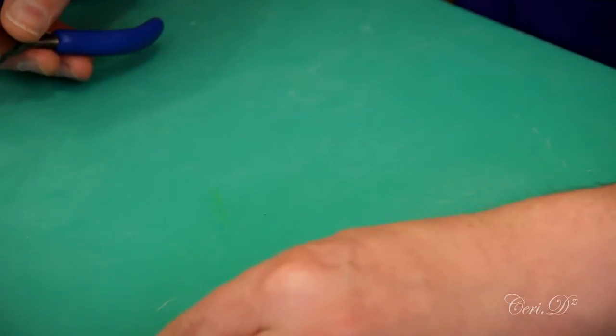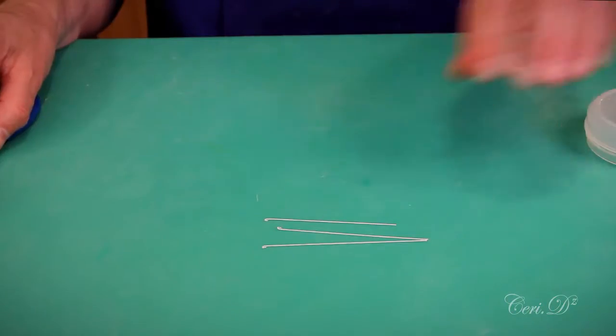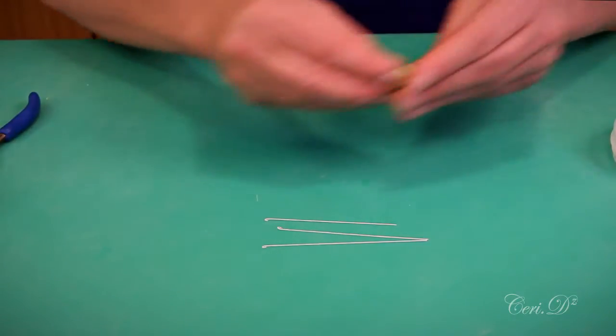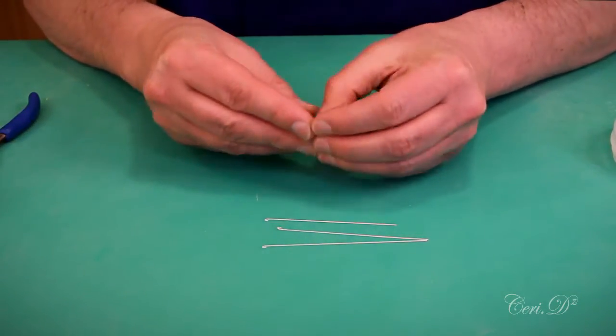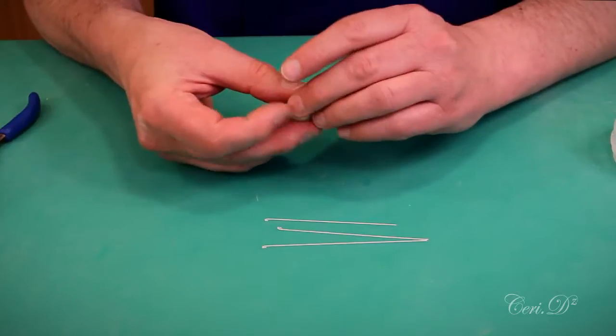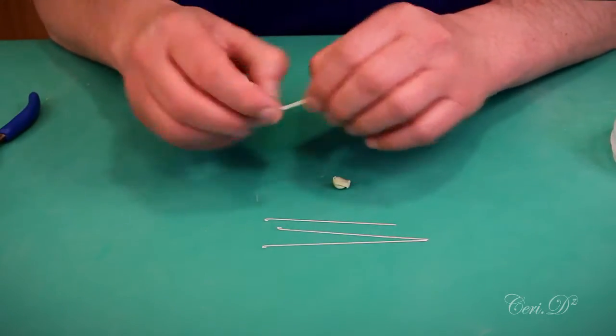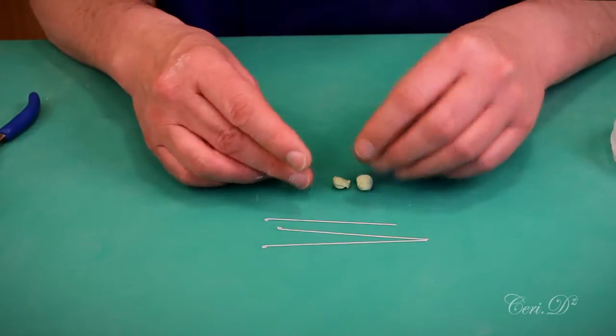I've got some pointy nose pliers here because I just want to give a little tiny hook to the end of each of those wires. So let's set those to one side and we'll use those. Now here I've got some flour paste or gum paste, depending on what you call it where you're from. I'm going to roll it into three equal amounts, approximately.